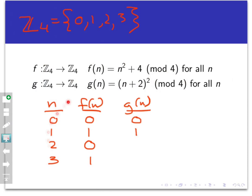Now, if I use 2, up here I have 2 plus 2, which is 4, 4 squared is 16, and 16 mod 4 is 0. And finally, if I use 3 here, I have 3 plus 2, which is 5, 5 squared is 25, and 25 mod 4 is 1.